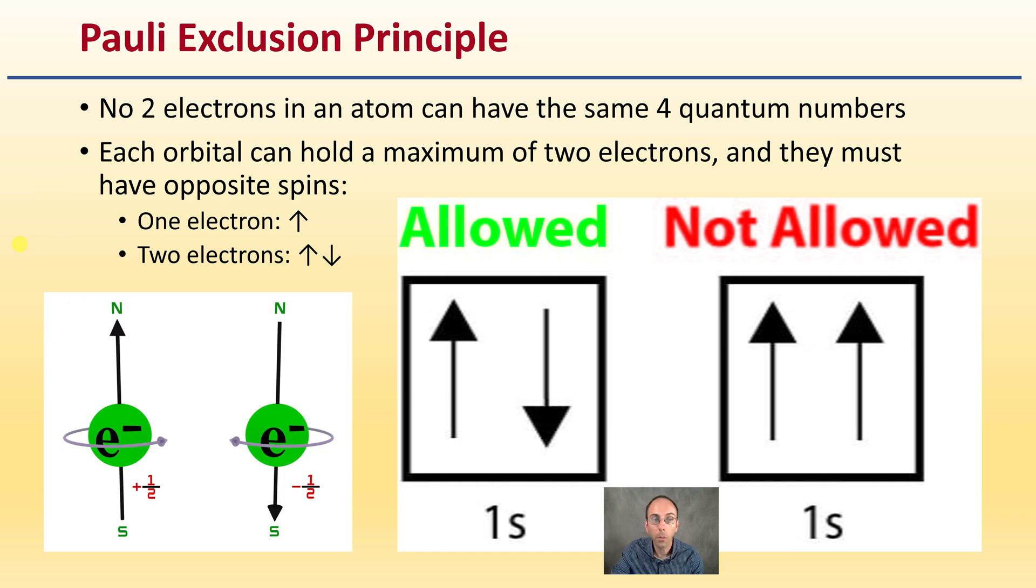So essentially, if there's one electron, there's one arrow going up. If there's two electrons, one goes up, one goes down. We don't have two electrons occupying the same box going in the same direction. One's an up arrow, one's a down arrow, and that has to do with the spins of those electrons.